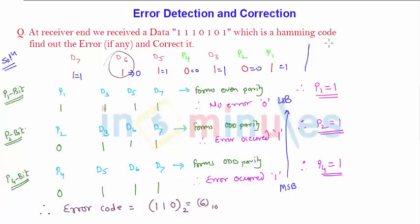Hence the corrected code. Therefore corrected code will be 1, 0, 1, 0, 1, 0, 1. In which this 6 bit is corrected to 0 from 1.